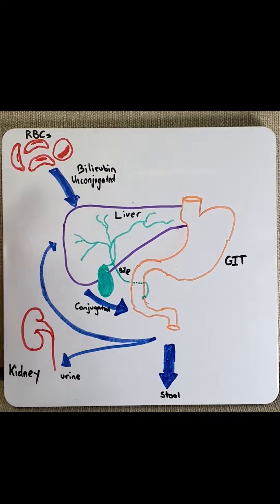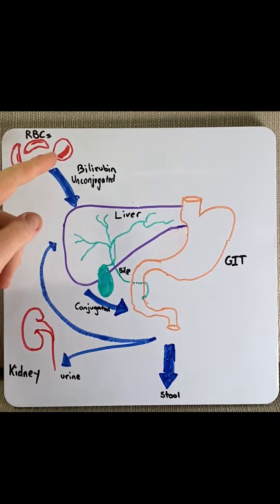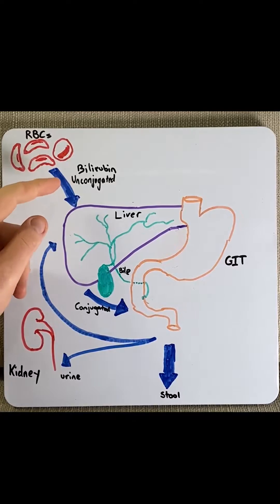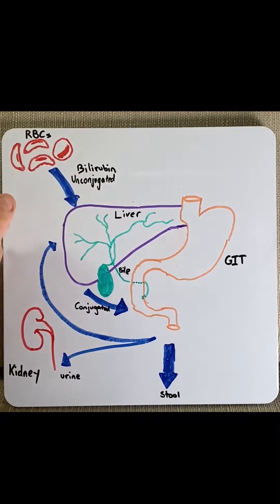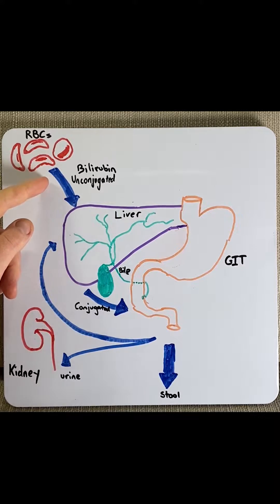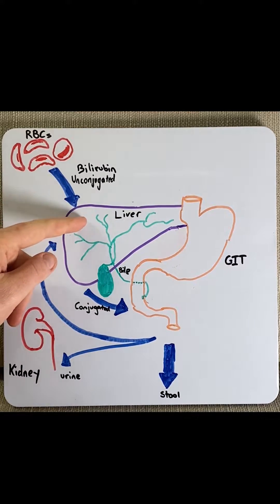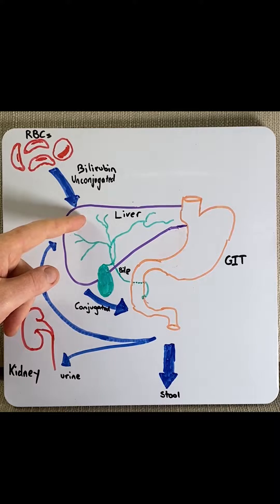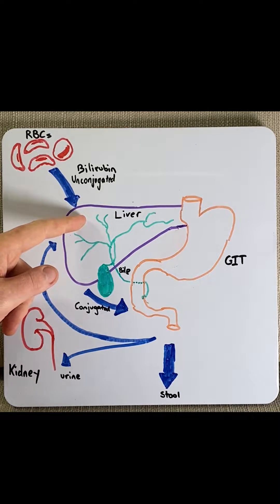Every second, one million old red blood cells are destroyed, making bilirubin which is not water-soluble, also known as unconjugated bilirubin. Here it is attached to albumin in the blood and taken to the liver. The liver then adds a sugar molecule to it and makes it water-soluble. This is known as conjugated bilirubin.